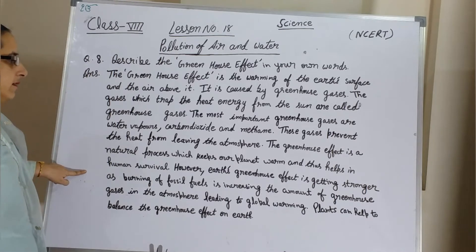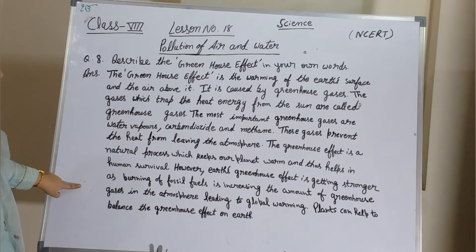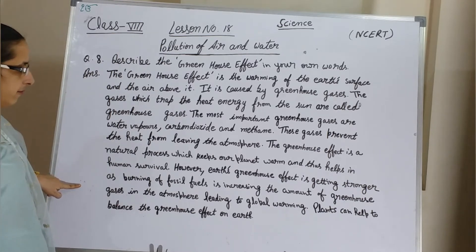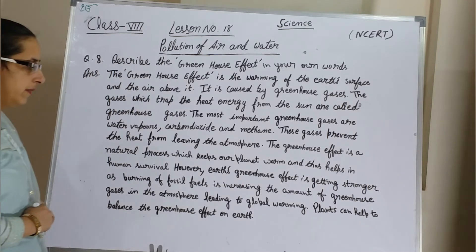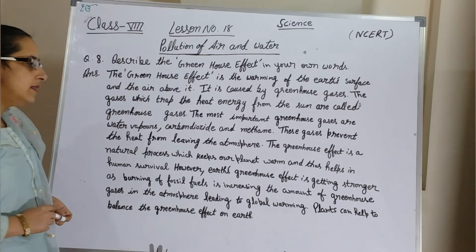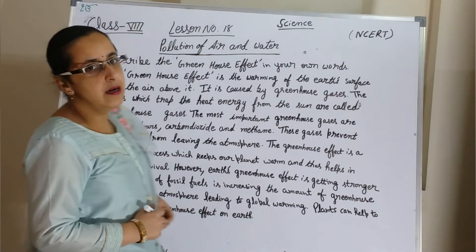However, earth's greenhouse effect is getting stronger as burning of fossil fuels is increasing the amount of greenhouse gases in the atmosphere, leading to global warming. Plants can help to balance the greenhouse effect on earth.